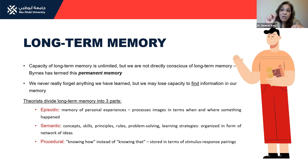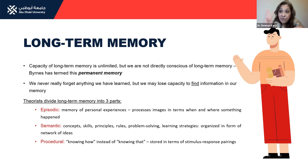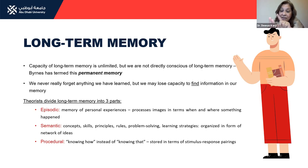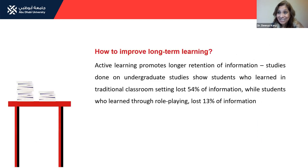To summarize: your long-term memory is permanent — you never forget what you learn. It's broken up into three parts: episodic memory — memories of important events; semantic memory — your concepts, skills, and knowledge organized in a network of ideas; and procedural memory — knowing how to do something. This is basically how your long-term memory is organized.